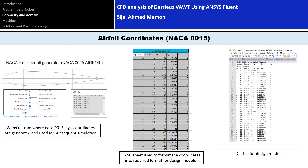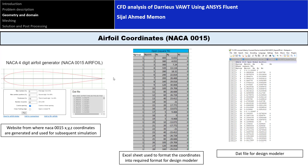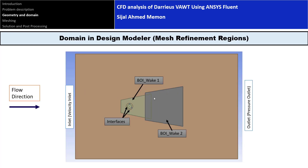We imported the aerofoil coordinates from a website, formatted them for ANSYS, and created a data file to read into the design modeler to get the aerofoil. From that aerofoil, we made three aerofoils at the required locations with the given chord length. We also made three domains to simulate the flow properly and two wake regions to properly simulate the wake.